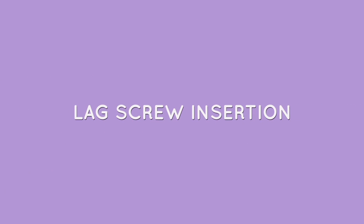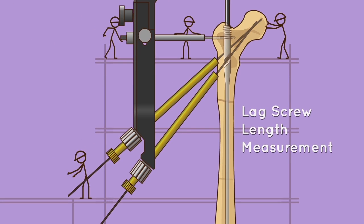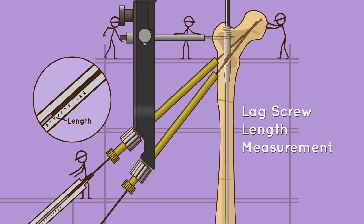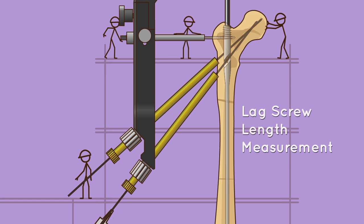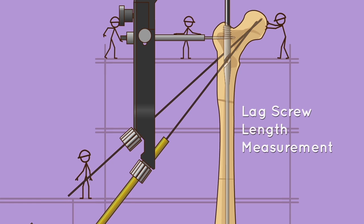Lag screw insertion - lag screw length measurement: using the depth gauge ruler, measure the lag screw lengths. If the measurements are in between two markings, always select the smaller length. Remove the depth gauge ruler and depth gauge sleeves once measurements are obtained. Leave the depth gauge wires.